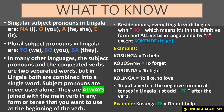Know that every Lingala verb begins with 'ko', which tells you the verb is in its infinitive form. All verbs in Lingala also end with 'a', except the verb 'to go' which is 'kokende'. For example, 'kosunga' starts with 'ko' and ends with 'a' — 'kosunga' means to help. 'Kobosana' means to forget, 'kobunda' means to fight, and 'kolinga' means to like or to love.